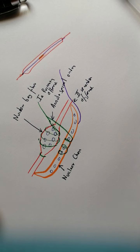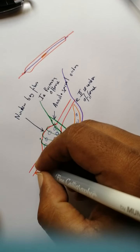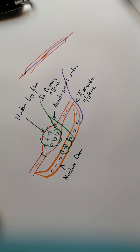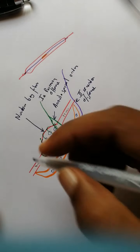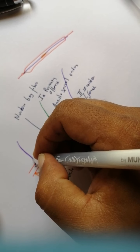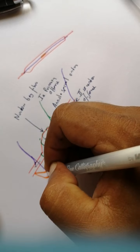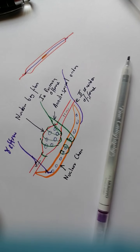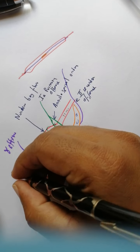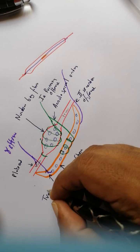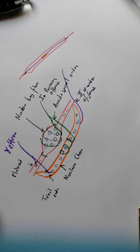An important feature of muscle spindles is that they have contractile elements on either side of the sensory region. These contractile elements are supplied by a different type of motor neuron called the gamma motor neuron. The gamma efferent supplies both bag and chain fibers. The ending it makes on the nuclear bag is called the plate ending, and on the nuclear chain it is called the trail ending.